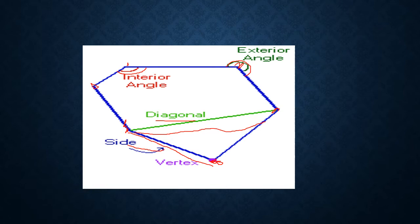Interior angle means the angle inside the polygon. Diagonal means the line segment which joins any two opposite vertices. Side of a polygon means the line segment which joins any two adjacent vertices. Vertex means the point where any two sides of the polygon intersect. I hope you understood. Now let us move on to the next concept.